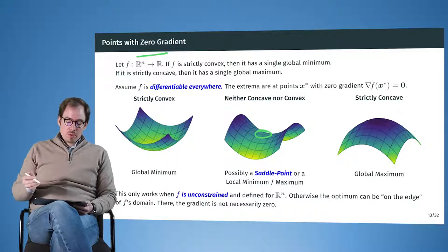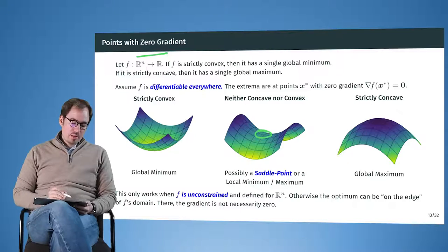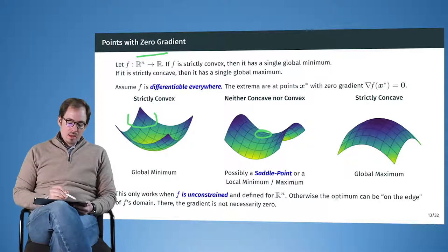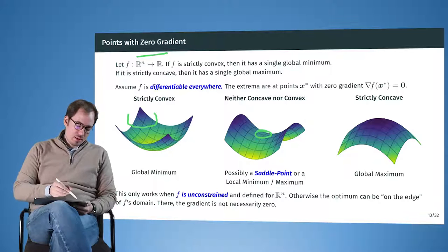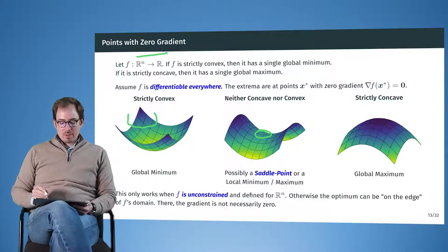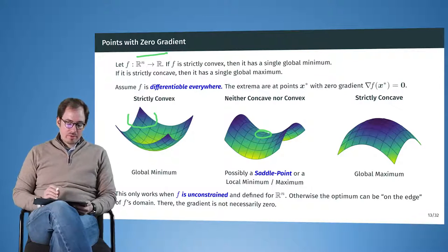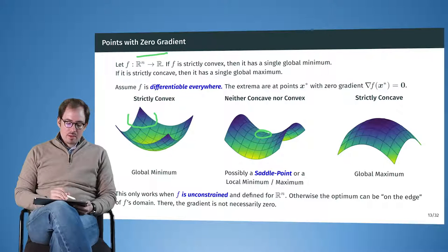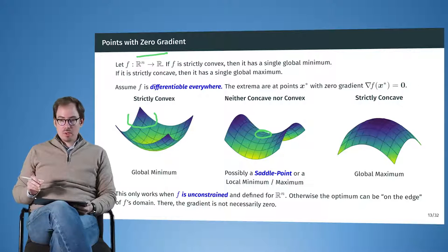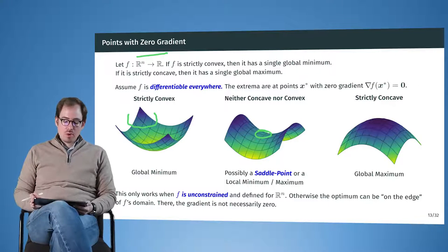But if we assume convexity, then we know that the minimizer must exist, and that at the position of the minimizer, the gradient will be exactly zero. If there are additional constraints, so if we have to say that the solution has to lie in a certain region of a subset of r to n, then it is no longer the case that at the minimizer, the gradient will be zero. But here we are still unconstrained, and therefore this is something that is always holding true in these unconstrained and convex optimization problems.